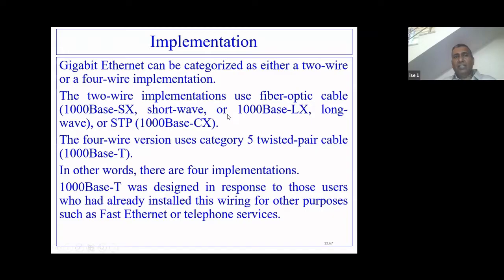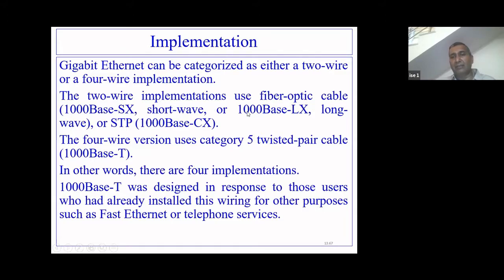Gigabit Ethernet was categorized into either two-wire or four-wire implementation. The two-wire implementation used three types of connectivity using fiber optic cables. These were: 1000BASE-SX, known as short wave; 1000BASE-LX, known as long wave; and 1000BASE-CX, which used shielded twisted pair (STP) cable.